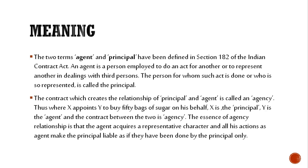The relationship between these two — agent and principal — is a contractual relationship. And what do we call this contract? Agency. For example: X appoints Y to buy 50 bags of sugar on his behalf.